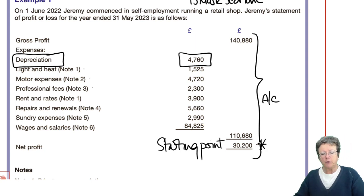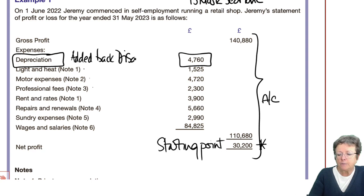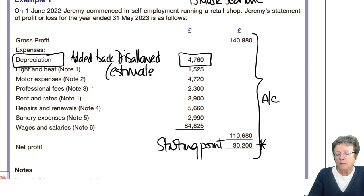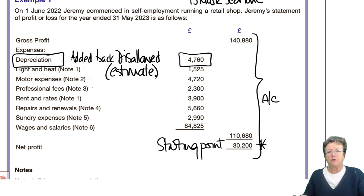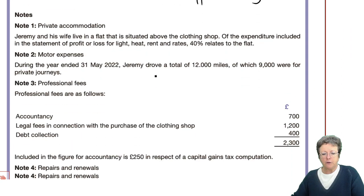This is our starting point. We've got their depreciation — that needs to be added back because it is a disallowed expense. Basically, it's an estimate, and Revenue don't like estimates. Let's look at each one of these individually.